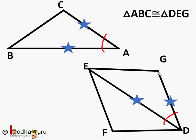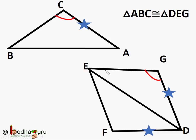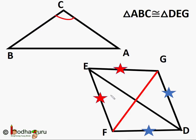Now, angle C equals angle G. Since AC equal to FD and AC equal to GD, we get FD equal to GD. Similarly, BC equal to EF and BC equal to EG (corresponding sides of congruent triangles), so EF equal to EG. Now we join points F and G, giving us two isosceles triangles.